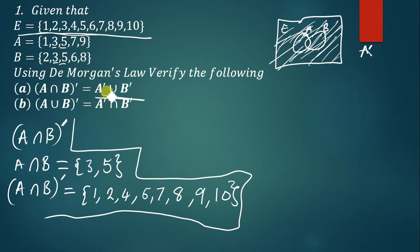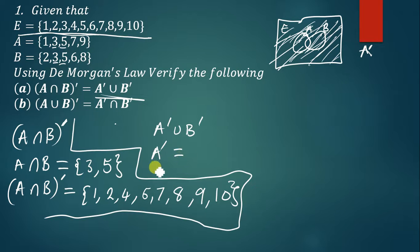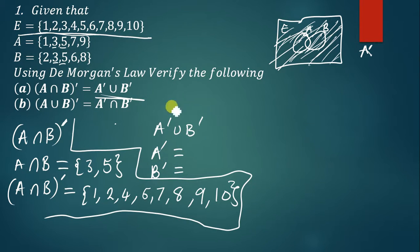Now let us find the right hand side, which is A'∪B'. To find this, we first need to find A', then find B', and when we have these two sets we find their union — combining the two sets and making sure that common elements are only written once.